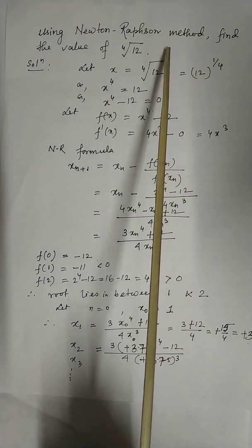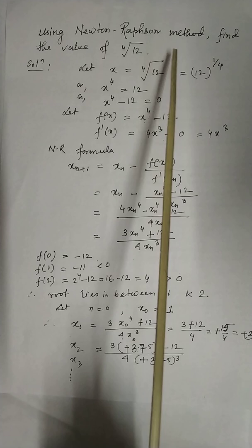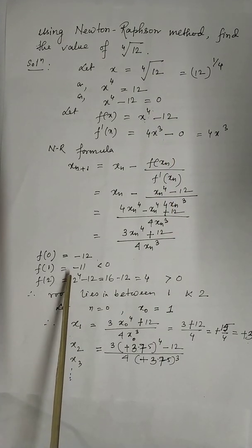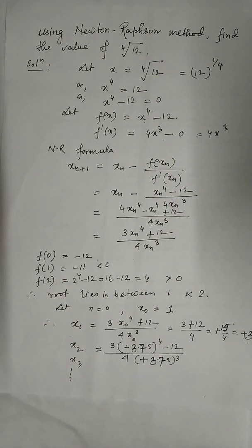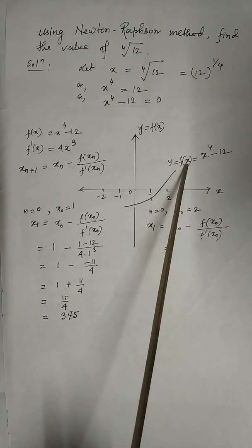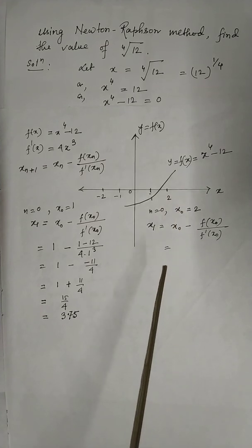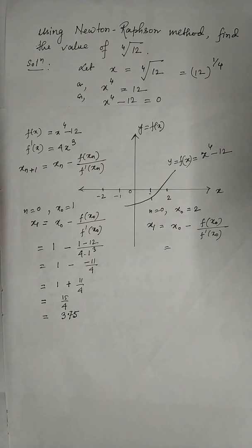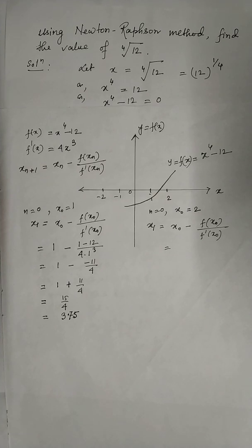In the question, the interval where the root lies has not been given, so you have to find the interval. To find the interval you have to know one theorem. The theorem states that if a function y equals f(x) is defined in an interval, and at a and b the functional values are of opposite signs, then there exists one root in between a and b.